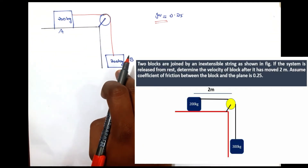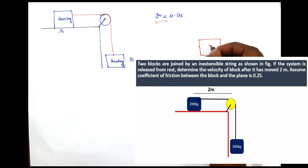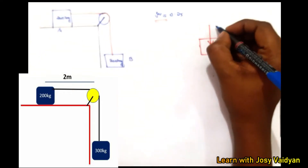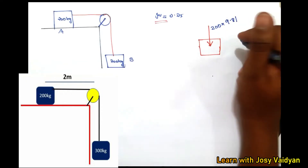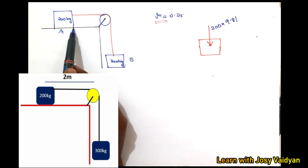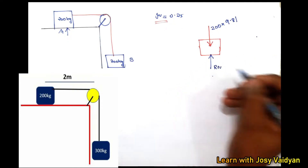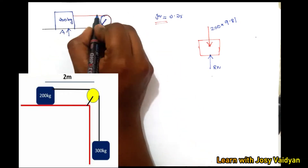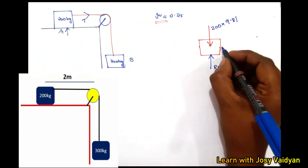We can analyze this with a free body diagram for each block separately. For the first block — the 200 kg mass — I will mark the weight acting downward as 200 into 9.81 Newtons. There is a contact surface, so a reaction force perpendicular to the surface is marked as RN. The string exerts a tensile force T acting on the body.